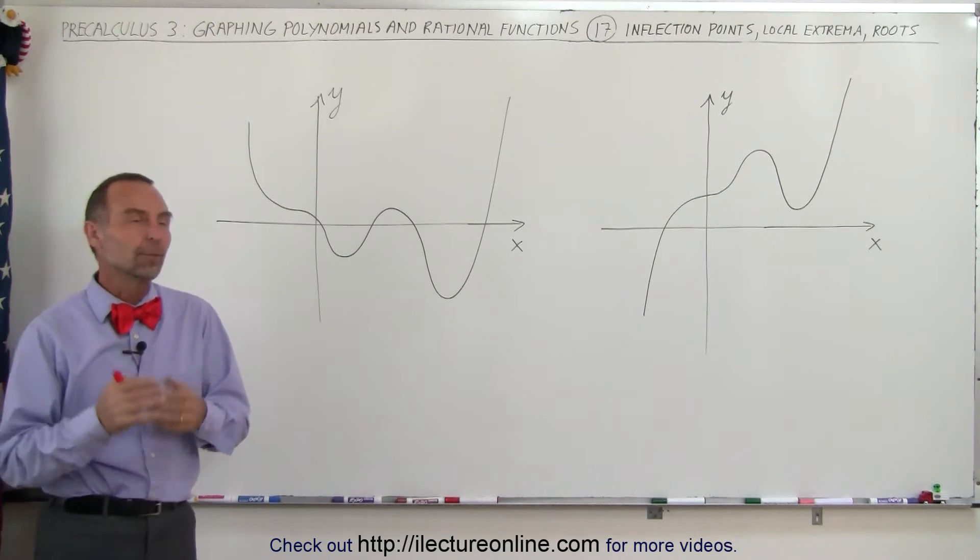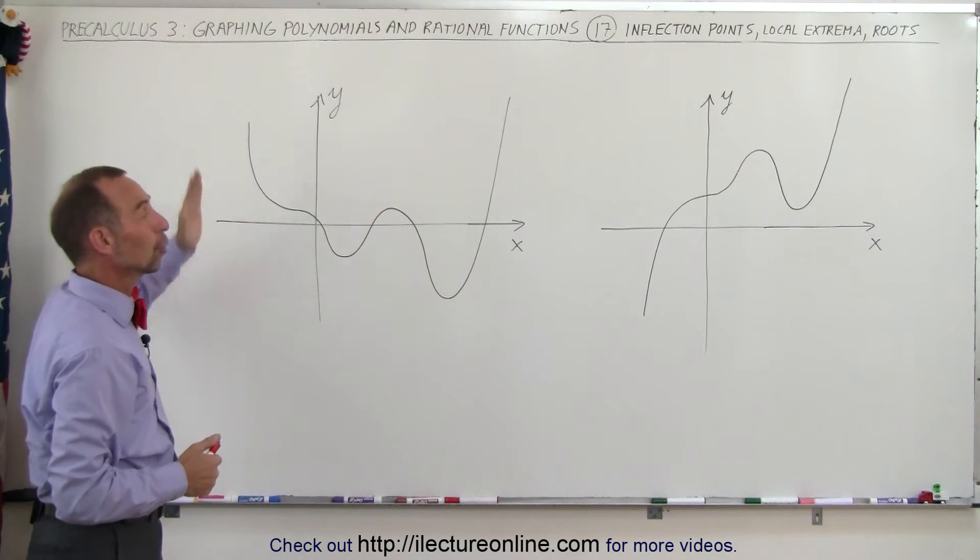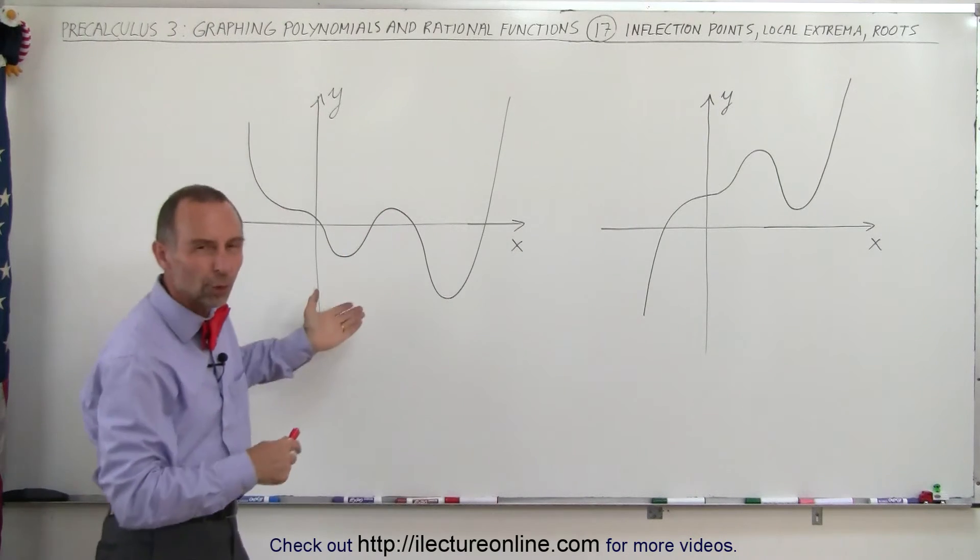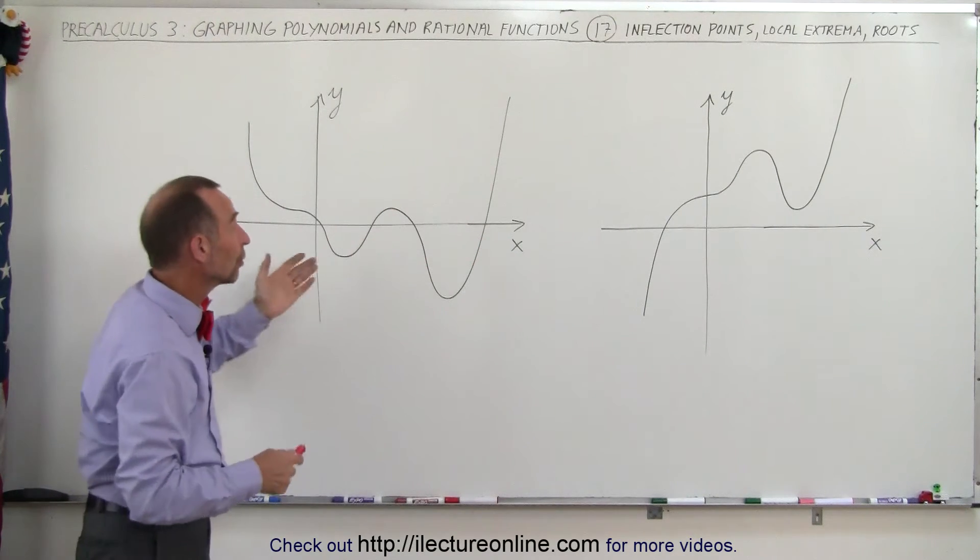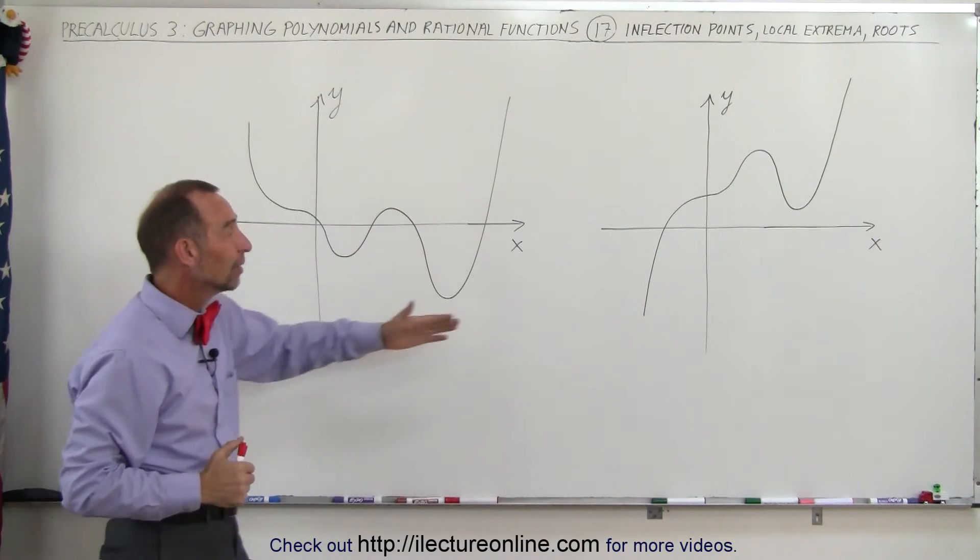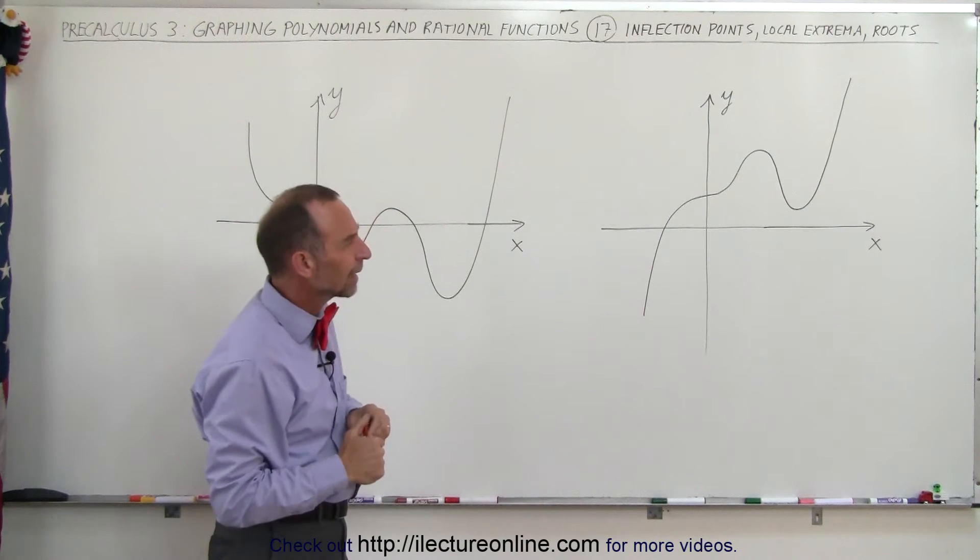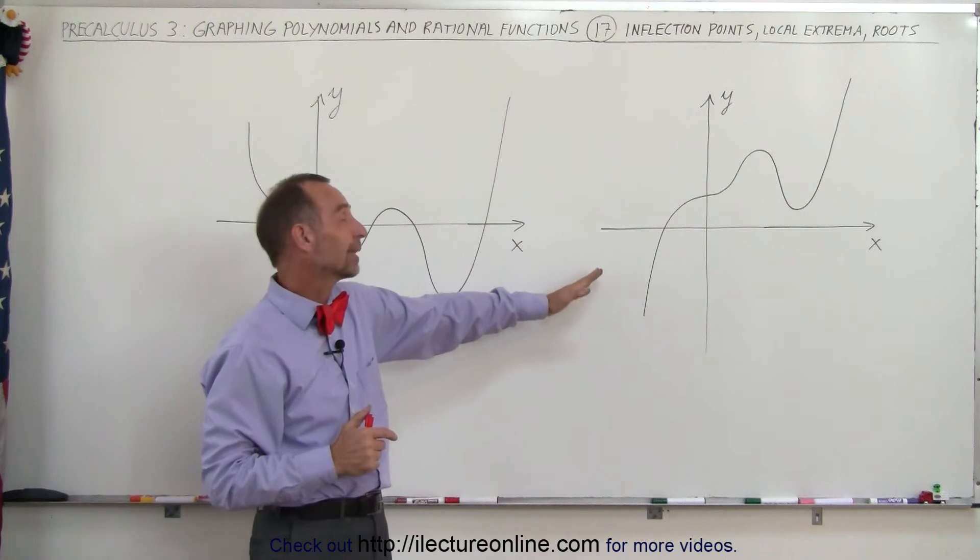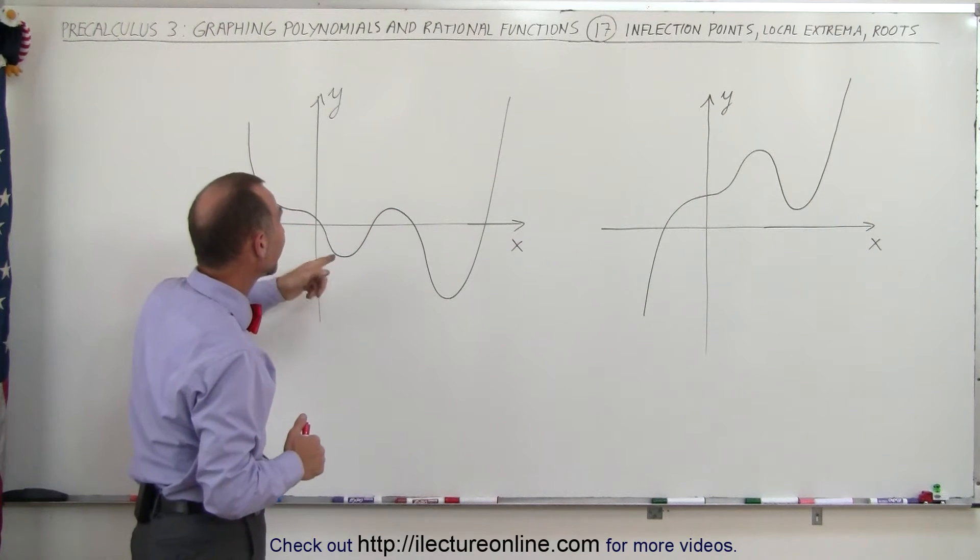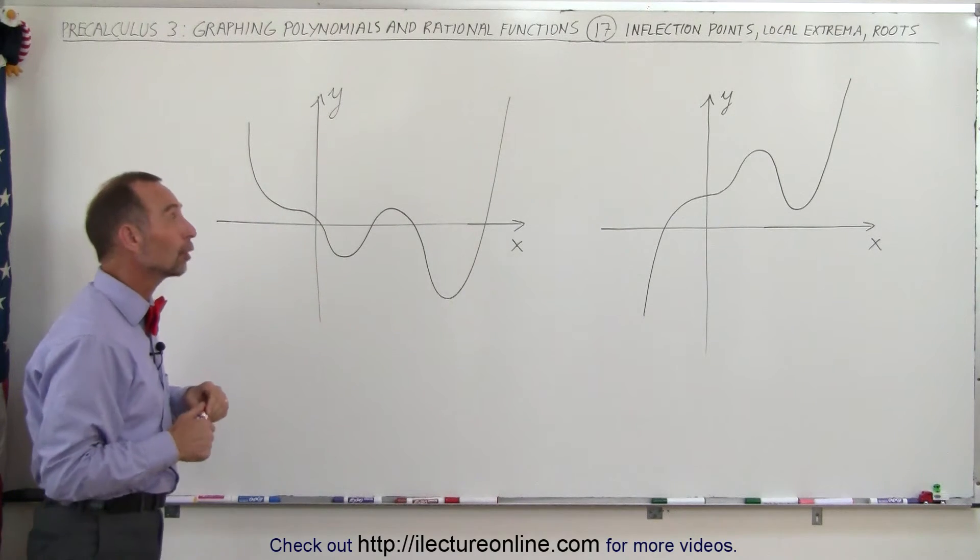So what are inflection points? Well notice here we have two graphs, one of an even polynomial function and one of an odd polynomial function. I should say even order and odd order. Even order means this is x to the fourth power, x to the sixth power, x to the eighth power, something like that. And this would be x cubed, x to the fifth, x to the seventh. Although looking at that, that probably could be an x cubed. That has to be at least an x to the fifth or an x to the seventh, and this would have to be at least an x to the sixth power. All right, it may be higher power, we don't know.